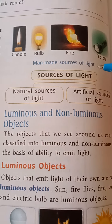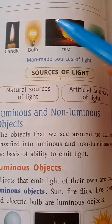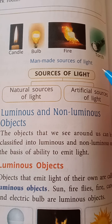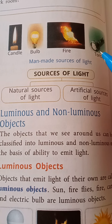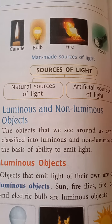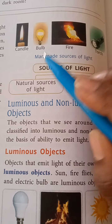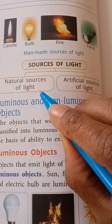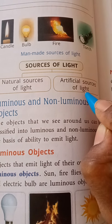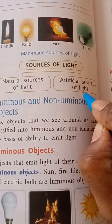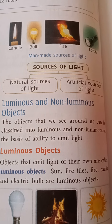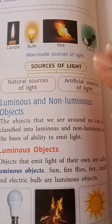Man-made sources of light include fire and torch. So, sources of light are divided into natural sources and artificial sources. Do you understand the difference between natural and artificial sources?